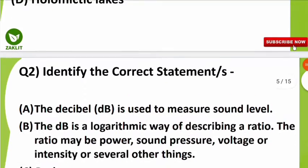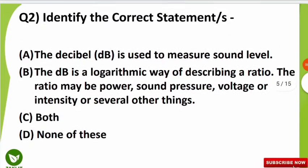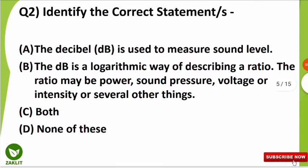The second question is: identify the correct statements. Two statements are given. The first one is: the decibel is used to measure sound level. The second one is: the decibel is a logarithmic way of describing a ratio — the ratio may be power, sound pressure, voltage, or intensity, or several other things. Select the correct option.